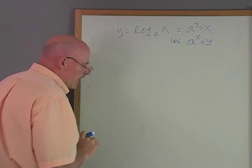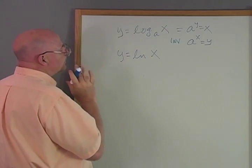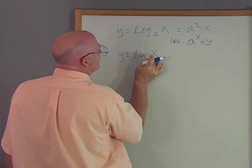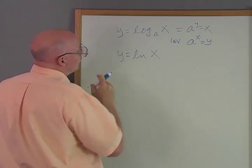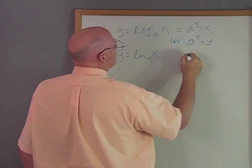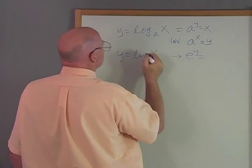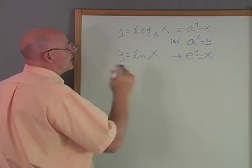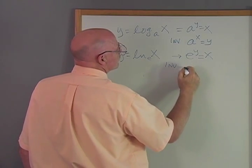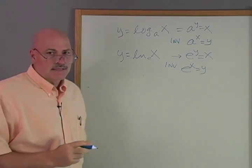And the same thing when we have Y equals the natural logarithm of X. And we know that the natural logarithm is the same as log to the E, base E. So I'm going to go put the E in here because then this would be the same as E to the Y equals X. But the inverse would be, switch these or reverse these, E to the X equals Y or Y equals E to the X.